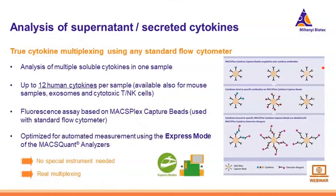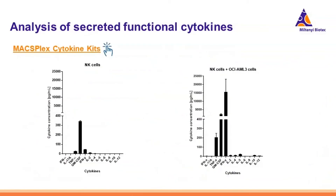If you want to detect up to 12 human cytokines from just one sample, you should try the MACSPlex cytokine kits. With just 50 microliters from your sample, you can get information about secreted cytokines. In combination with the MACSQuant analyzer, the MACSPlex cytokine kits are optimized for automated measurements and simplified flow cytometric analysis, with predefined experiment settings as well as acquisition and analysis templates. As one example, NK cells activated with IL-2 alone versus IL-2 together with targets show that cytokines such as TNF, GM-CSF, and interferon gamma are upregulated upon target cell encounter — and all 12 markers can be analyzed within one sample.